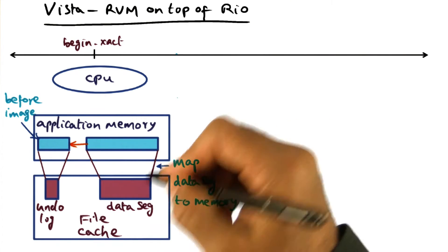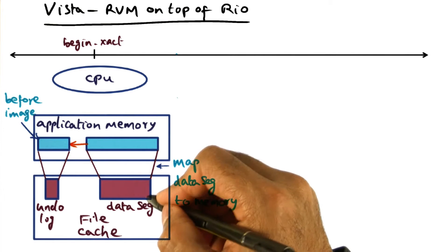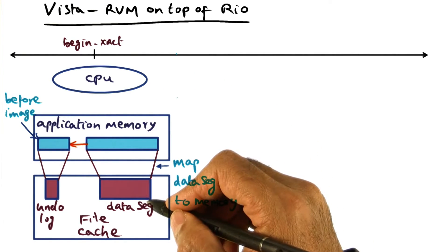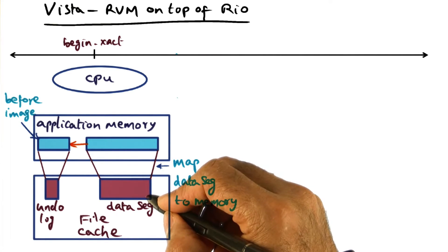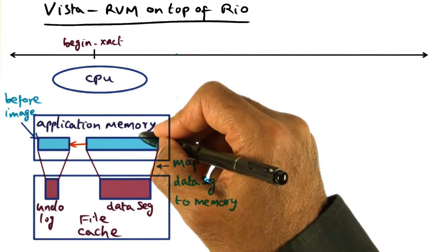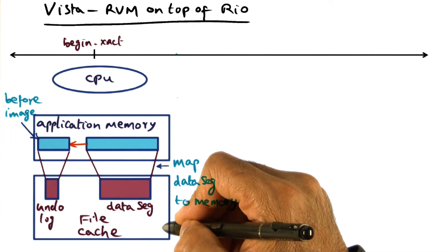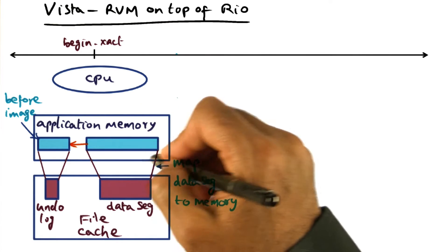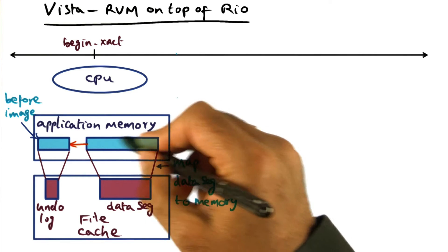What we're going to do in implementing RVM using the Rio file cache is to map the data segment to the virtual memory, exactly similar to what was done in the LRVM primitive. When we map the external data segment to virtual memory, this portion of the memory becomes persistent because it is contained in the file cache, and this file cache survives power failure because of the battery backup. Therefore, we've made this portion of the virtual memory that is mapped to this data segment persistent.